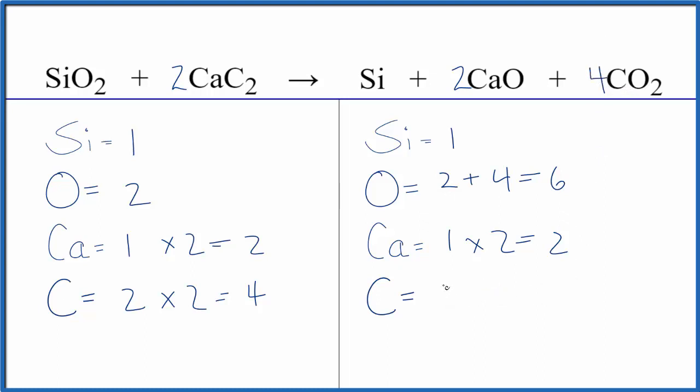So we'll put a four here. One times four, that gives us four carbons. And we need to update the oxygen atoms again because this four goes to everything. I think we're getting close though. So two times one is two plus four times two, that's eight. So we have ten.